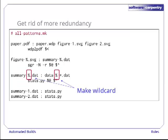Just as a reminder, the percentage is a MAKE wildcard. It matches the same thing on the left and right side of a pattern rule. Star is a shell wildcard. It matches zero or more characters in a file name when it's evaluated.